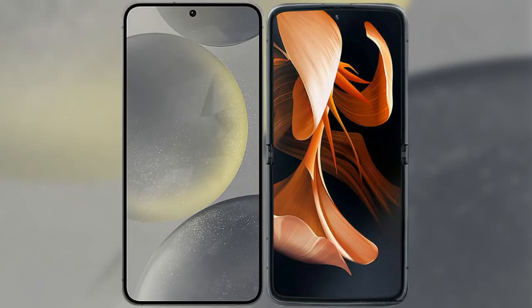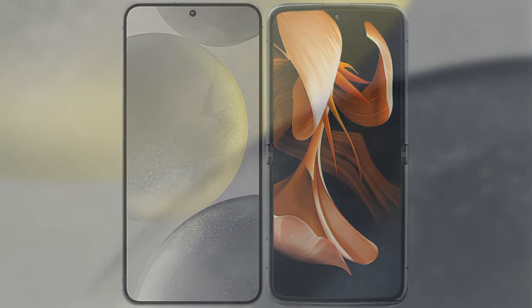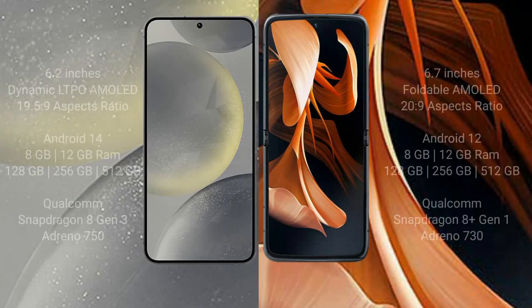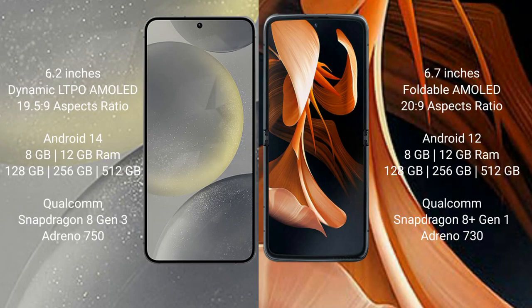I will compare the new Samsung Galaxy S24 with Motorola Razr. Samsung Galaxy S24 comes with a 6.2-inch Dynamic LTPO AMOLED display and aspect ratio 19.5:9. Motorola Razr comes with a 6.7-inch Foldable AMOLED display and aspect ratio 20:9.